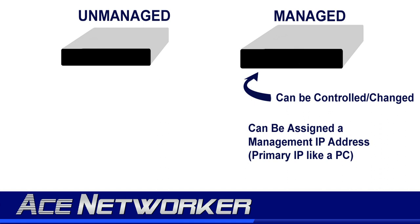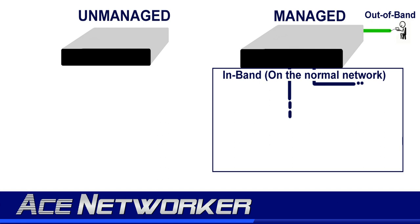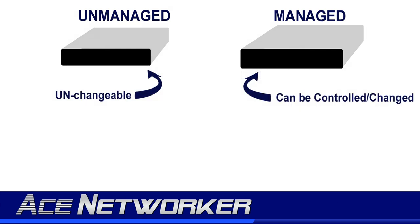I'm also going to get into what's known as out-of-band management on Layer 2 switches. When you use out-of-band management, you don't necessarily need a management IP on a switch — though that depends on the manufacturer. We're going to talk about out-of-band management in a later video. But for now, for the Network Plus certification exam, just remember that a managed switch is one that allows whoever is running the network to make changes to its configuration and settings.